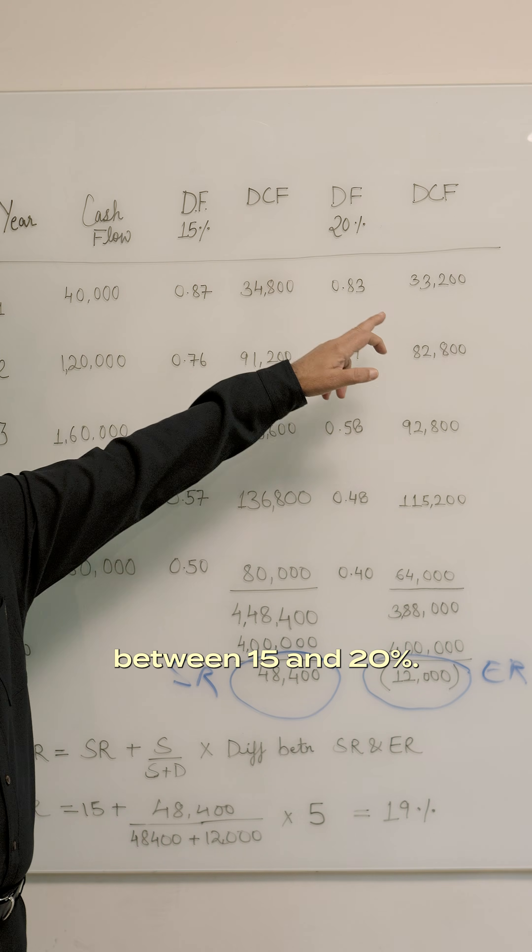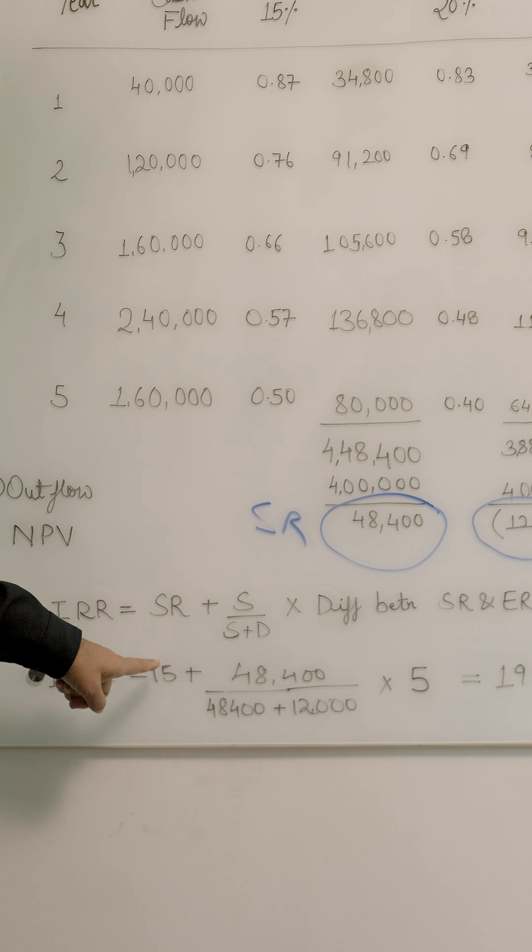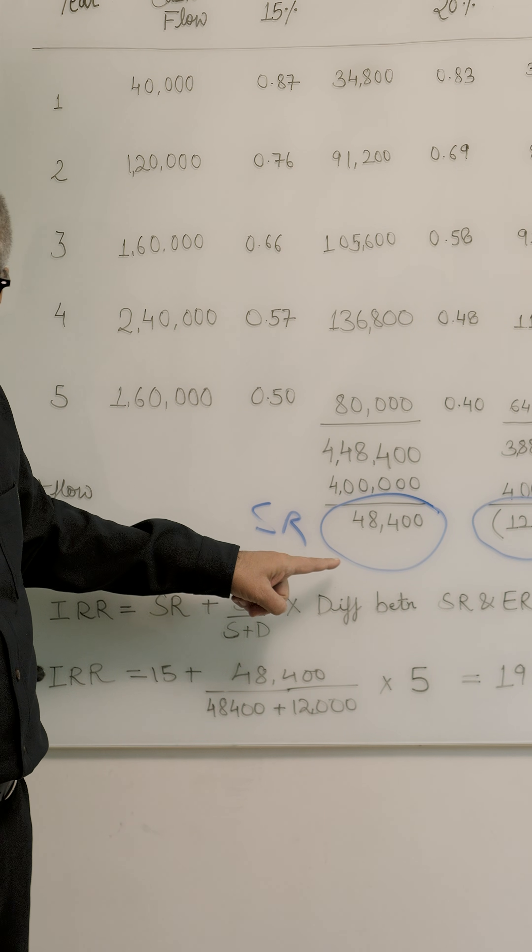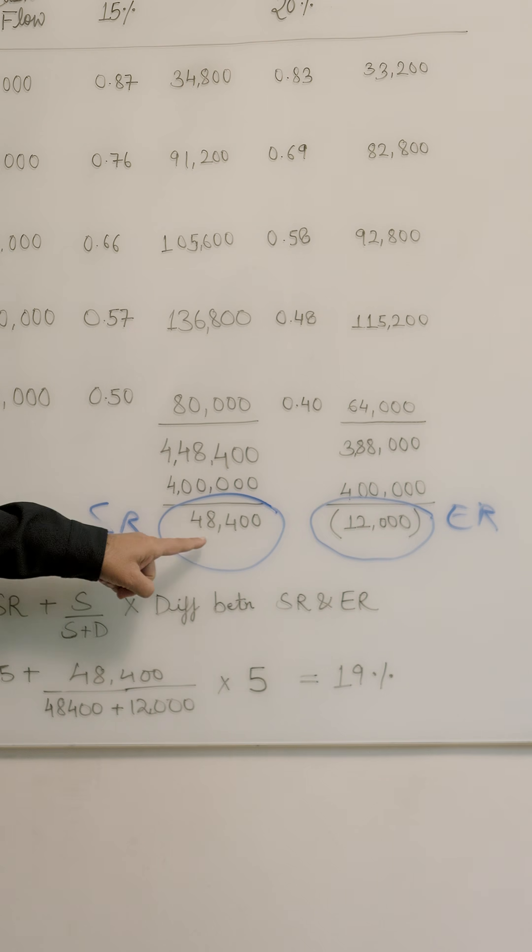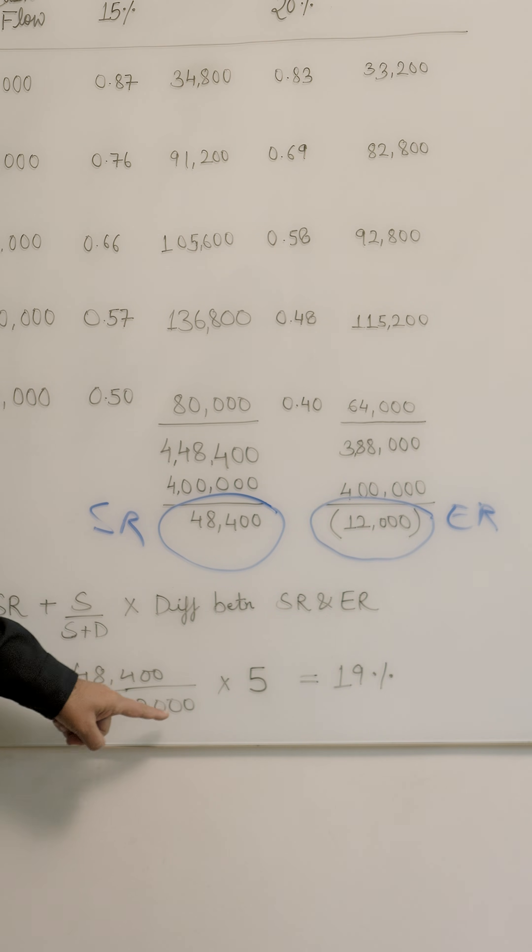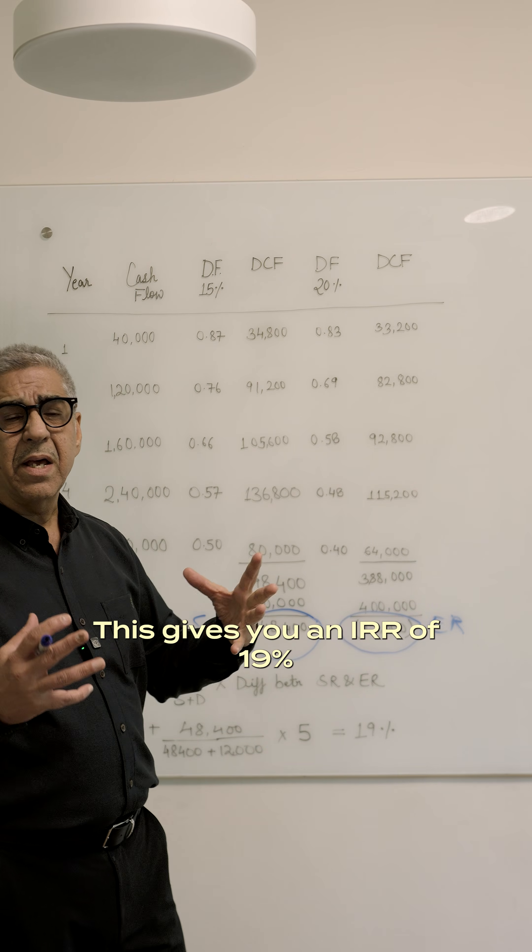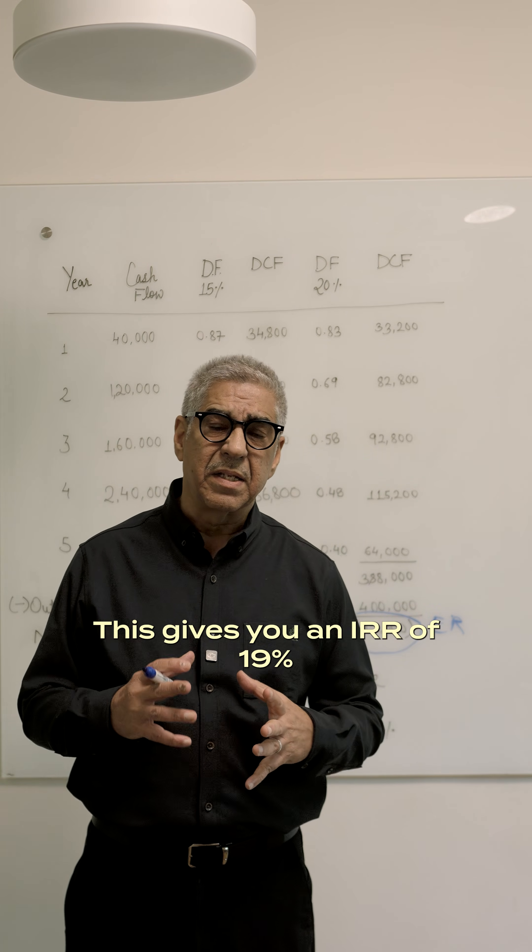In this case, the difference between 15 and 20%. So the start rate is 15% plus 48,400 which is the surplus at 15% divide by surplus plus deficit 48,000 plus 12,000 multiplied by the difference. This gives you an IRR of 19% in this case.